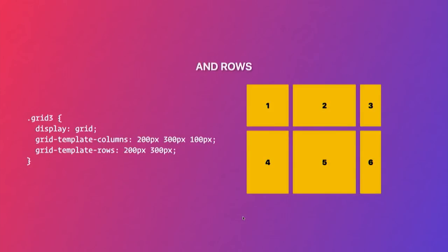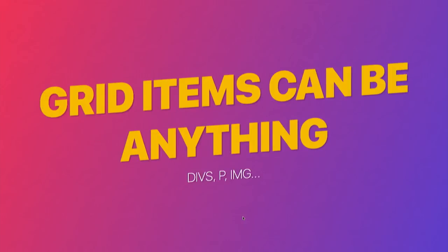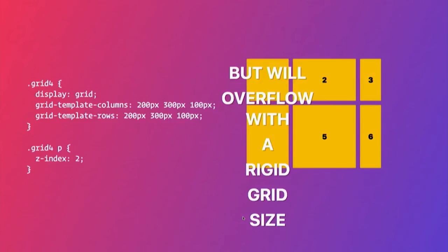Tracks are columns and rows — that's the word we use to collectively refer to both. You define a grid with display grid, then slice it up with grid-template-columns: 200, 300, 100 — that gives you three columns with respective sizes. Same for rows. By default, grid items will span to fit just one grid spot. Grid items can be anything that's a direct descendant of your containing element. If you have content larger than the column, it will overflow with a rigid size.